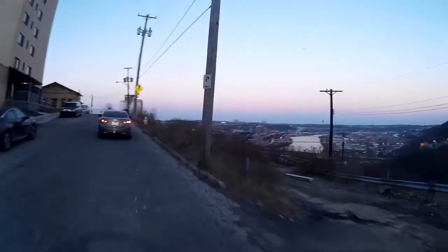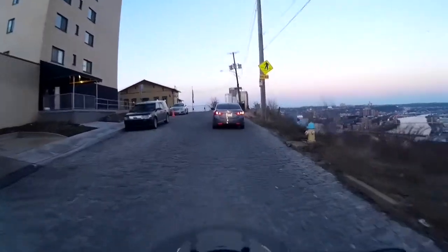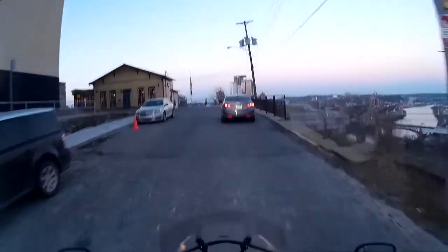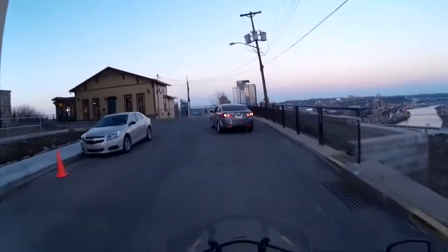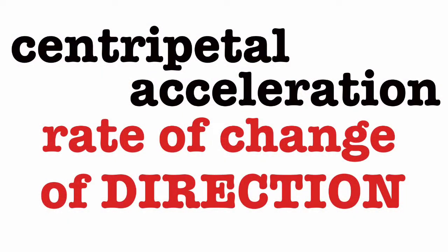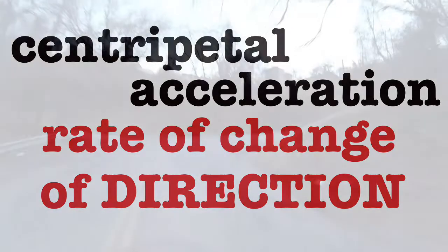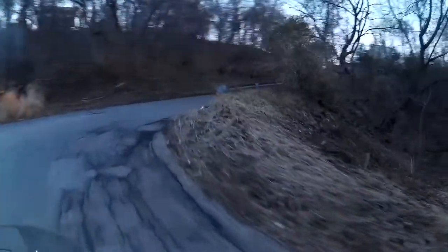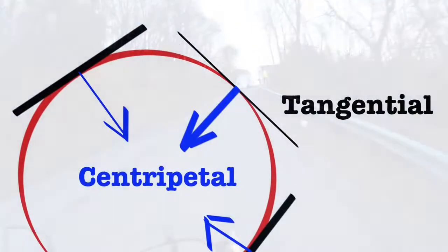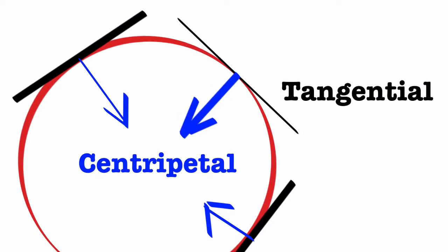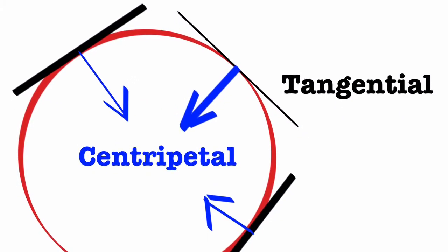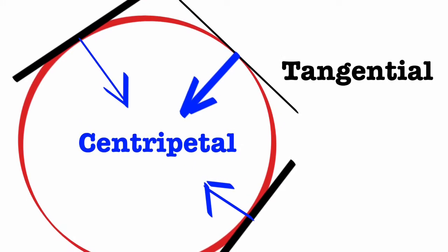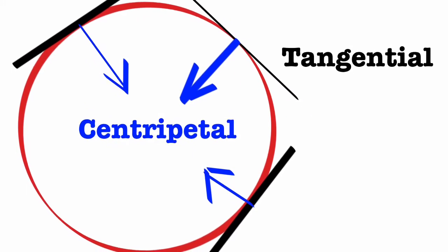This is just a constant tangential speed with zero tangential acceleration. Now the centripetal acceleration is all about the rate of change of direction — this one is only changing direction. Tangential is always along the tangent; centripetal is always toward the center.